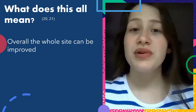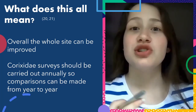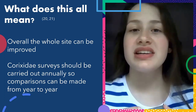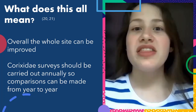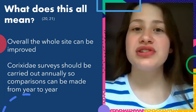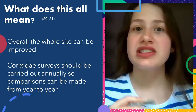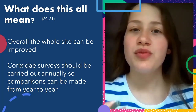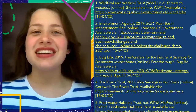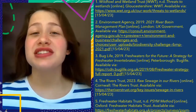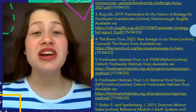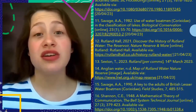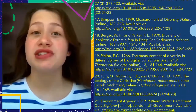Finally, if we want to continue further, more Corixidae studies should be done alongside taking water quality tests. If done every year, you'll get a grasp of how much the Corixidae species change depending on the amount of phosphorus or nitrogen in the water. Thanks for watching — you can find all the references on the screen right now if you're interested. Be sure to check out the Rutland website, or even visit or volunteer to help out with projects such as this one.